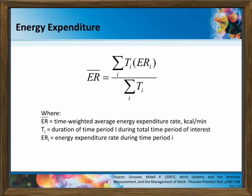For our energy expenditure, we have the formula for ER bar, which is the time weighted average energy expenditure rate in units of kcal per minute. This is the summation of the product of your time multiplied by the energy expenditure rate for activity i, divided by the total sum of your working time and your resting time.